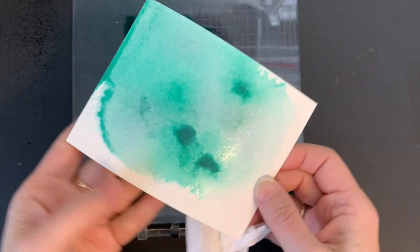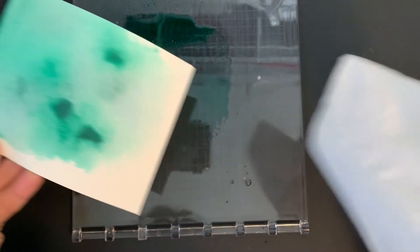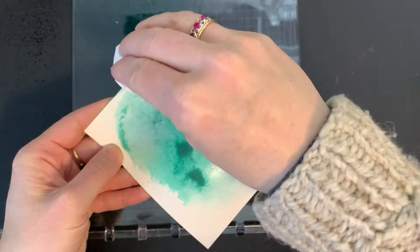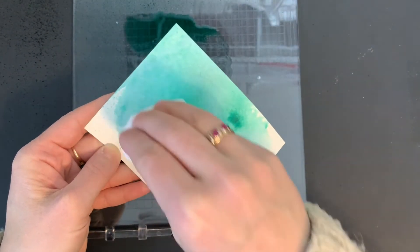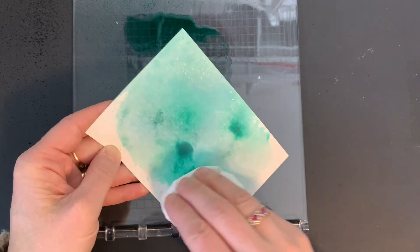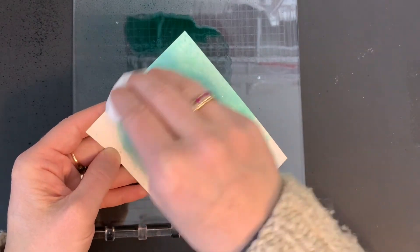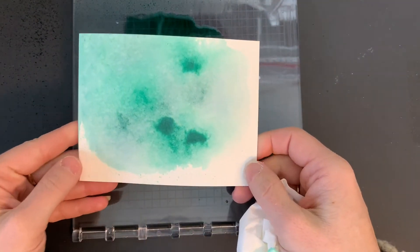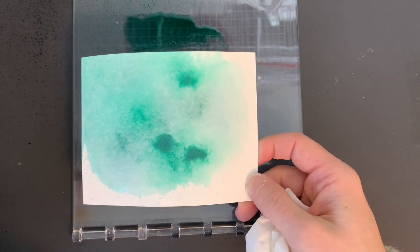You can actually bring in a tissue and dab off some of the extra ink there. Then you would just need to set this aside and let it dry.